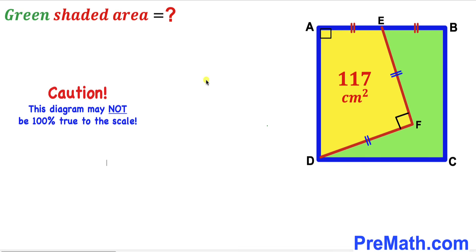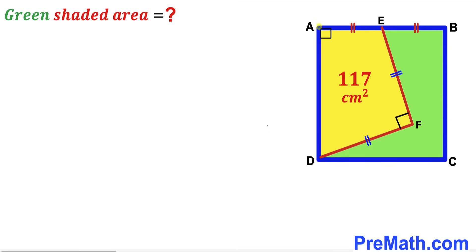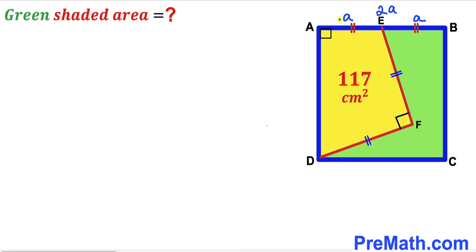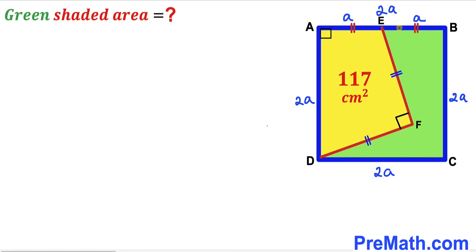Please keep in mind that the figure may not be 100% true to scale. In our first step, I'm going to label segment AE as lowercase a, then segment EB is also lowercase a. So the whole side AB has length a plus a, which equals two times a. Since this is a square, all sides are two times a. I'll also label segment EF as x, and segment DF is x as well.